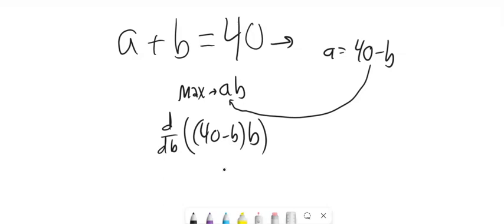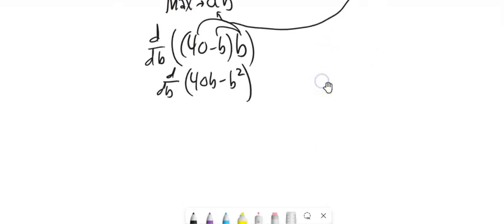Okay. So, I think I'll distribute that into there first: 40B minus B squared. Take this derivative, which is 40 minus 2B.